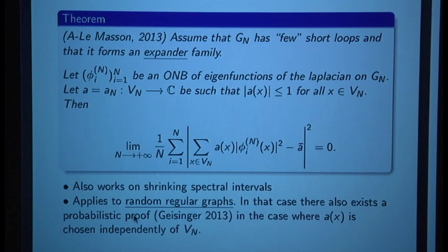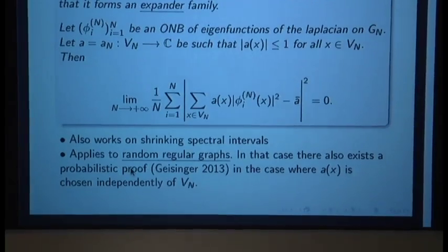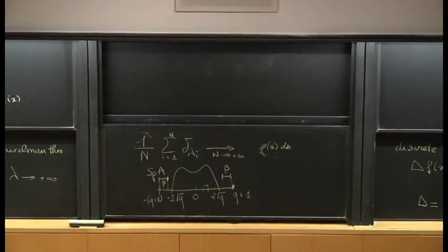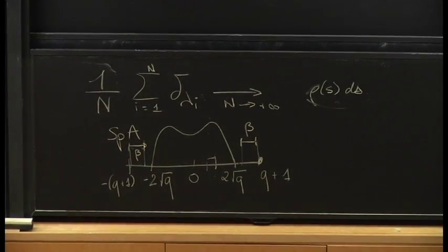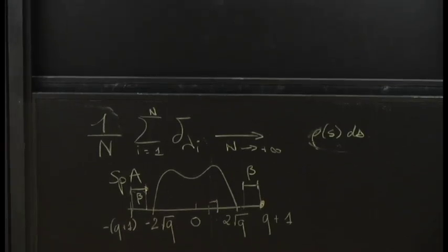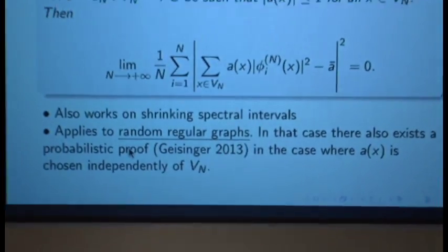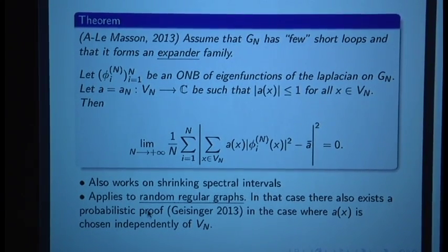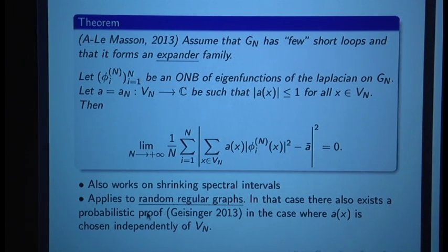Two remarks. First, we are averaging over the whole spectrum, but we can strengthen this: it is possible to average over shrinking spectral intervals, provided they shrink not too fast around a value in the bulk of the spectrum. Second, this is a deterministic statement — we assume a sequence of graphs satisfying certain assumptions and derive a result. But it also applies to random regular graphs: a random regular graph with high probability has few short loops and forms an expander family.